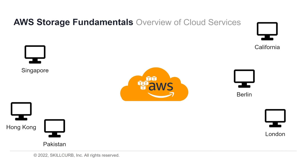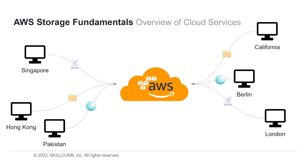So say we have all these stations — for example, Singapore, California, Berlin, London, Hong Kong, and Pakistan — and all of these computers wanted some files, objects, or whatever to be shared between each other. What can we do to unify all these systems in different places so they can have access to all the files they need? One way of doing that is for them to upload their files onto the cloud.